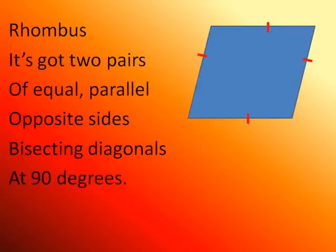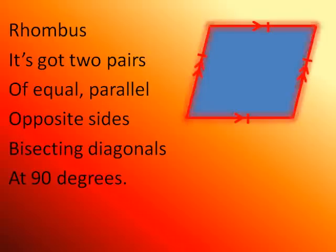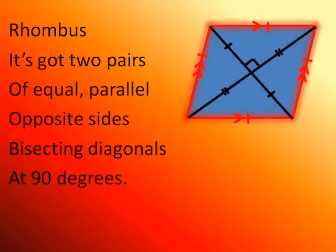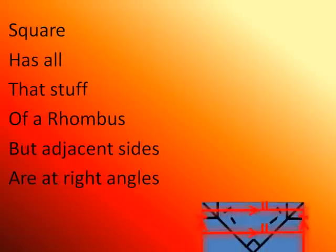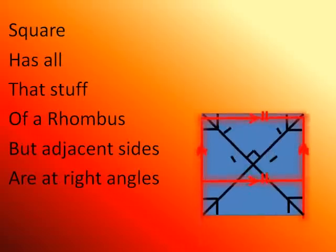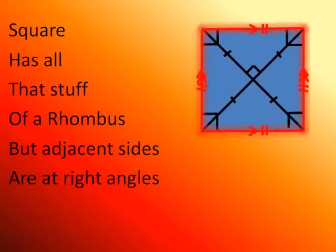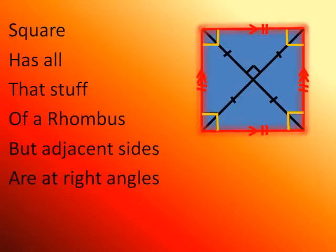Rhombus — it's got parallel opposite sides, bisecting diagonals at 90 degrees. Square has all that stuff of rhombus, but adjacent sides are at right angles.